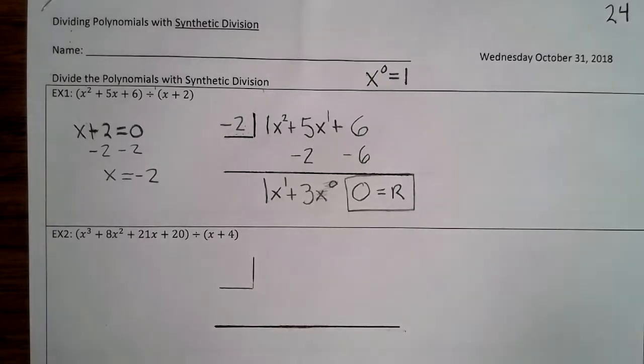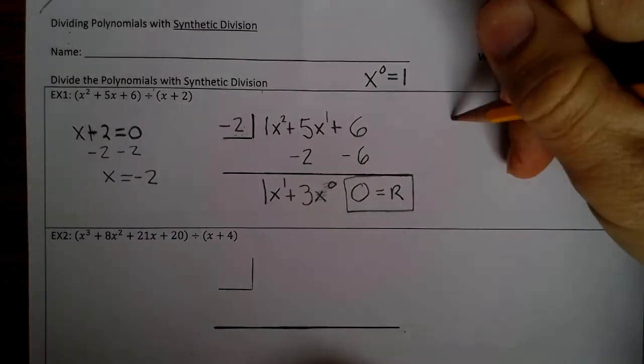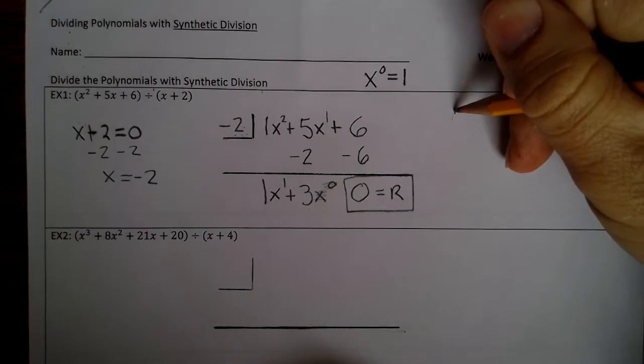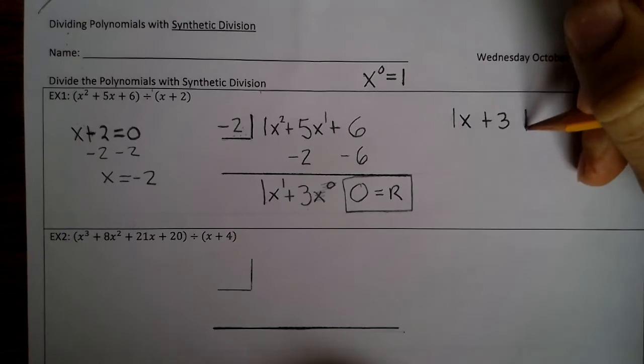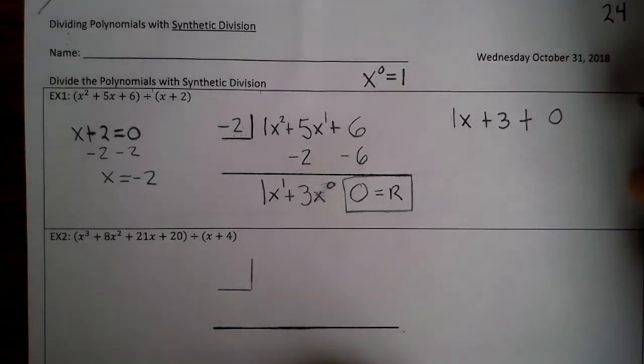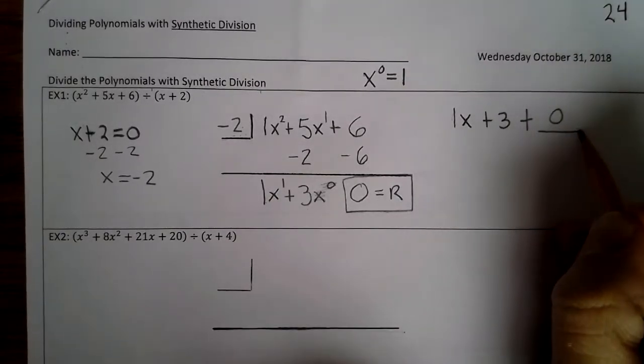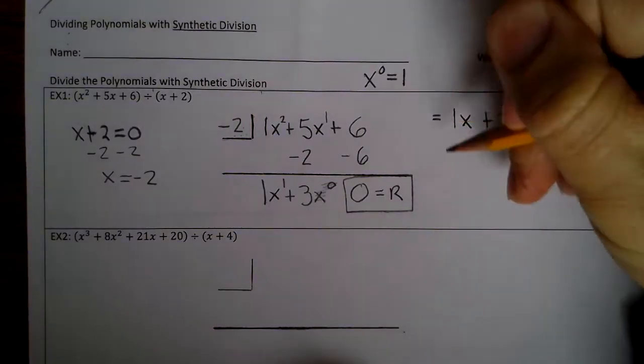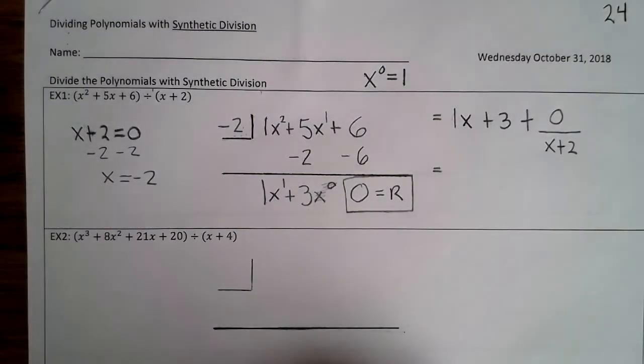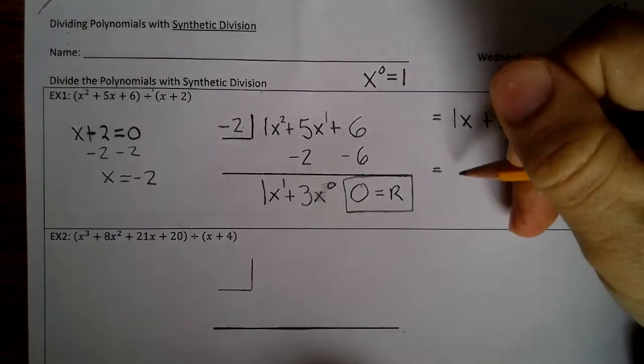So now, in conclusion, we have 1x plus 3 plus 0 divided by x + 2. Now, in essence, this is just 0, so we just have 1x + 3.